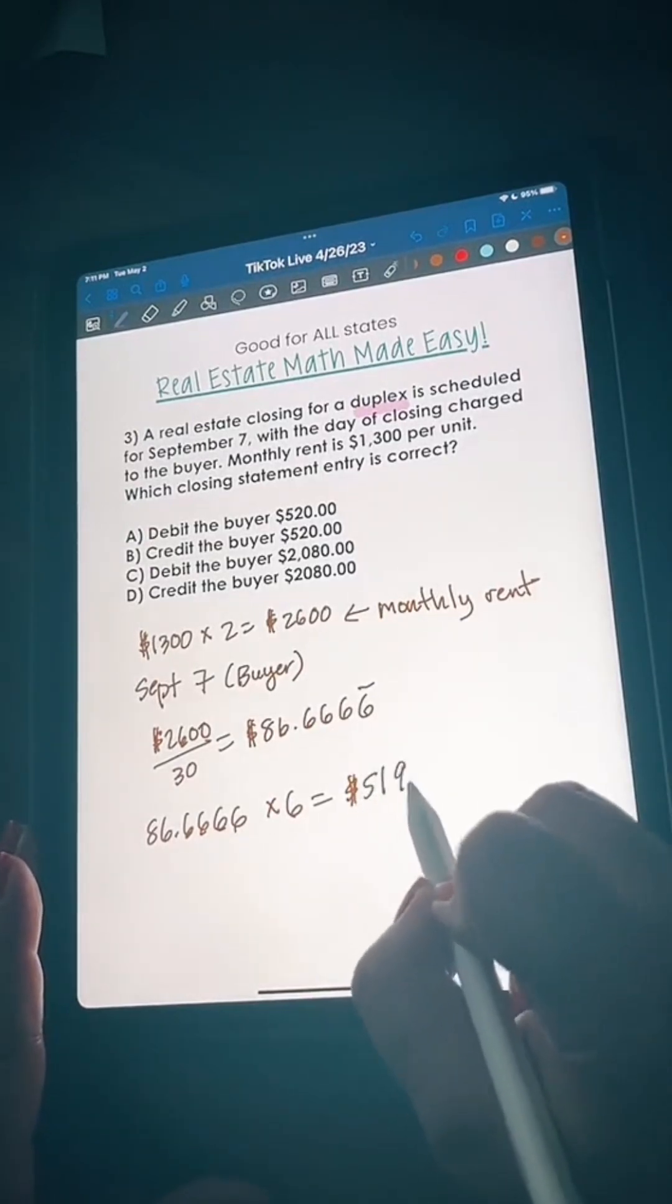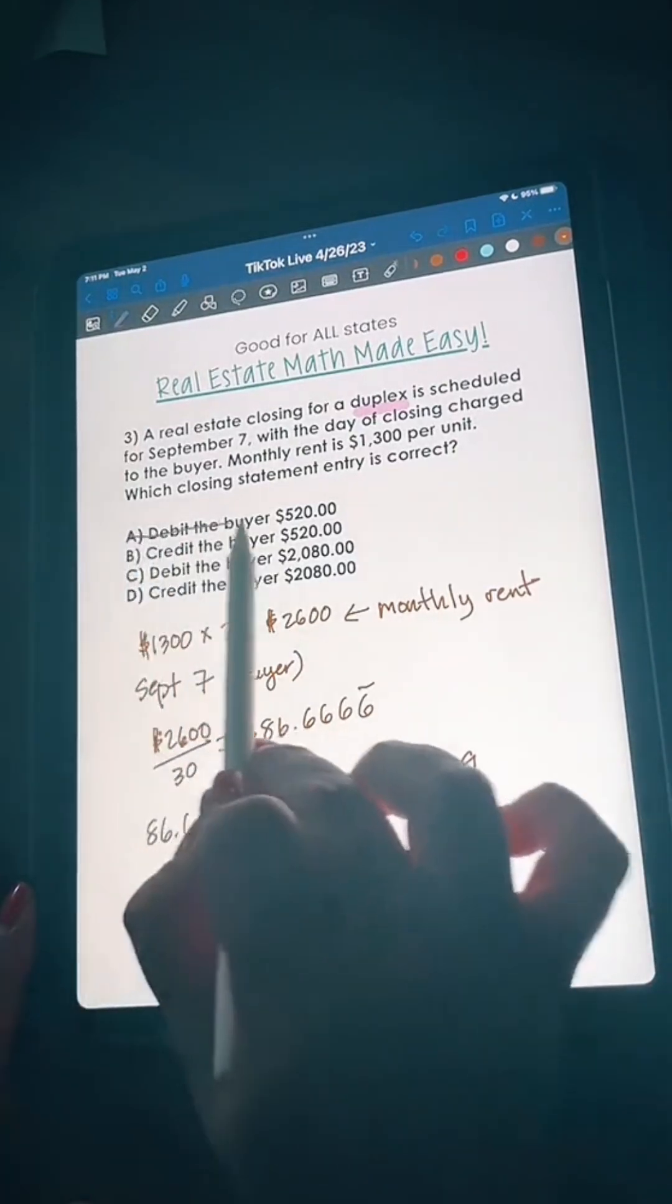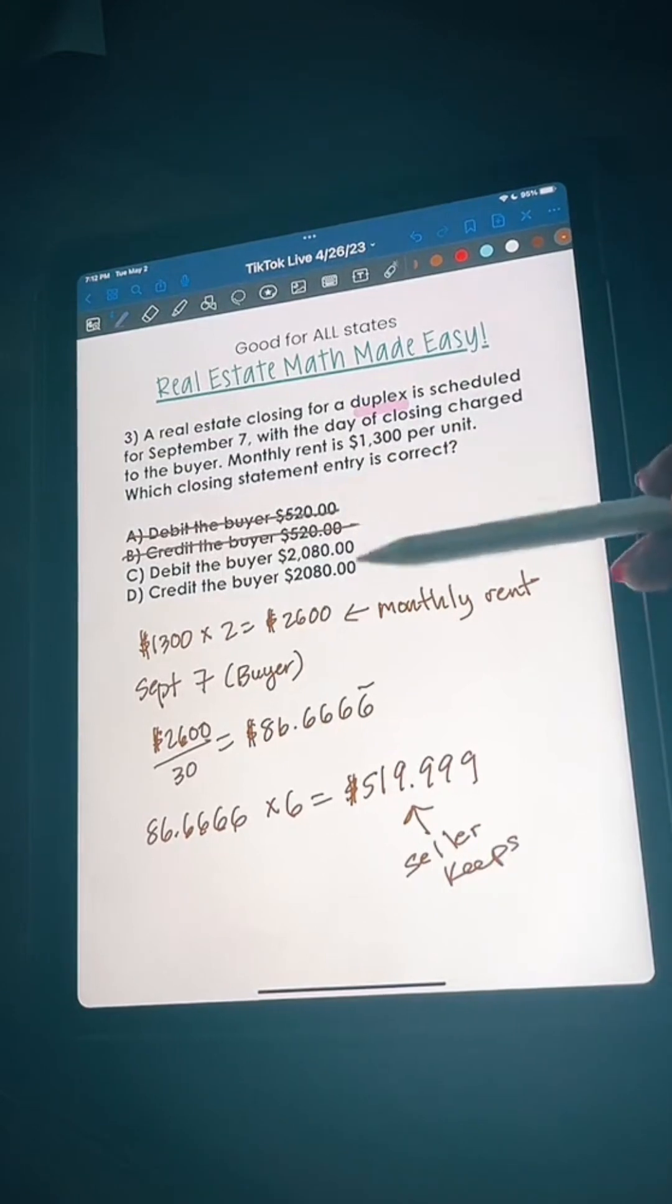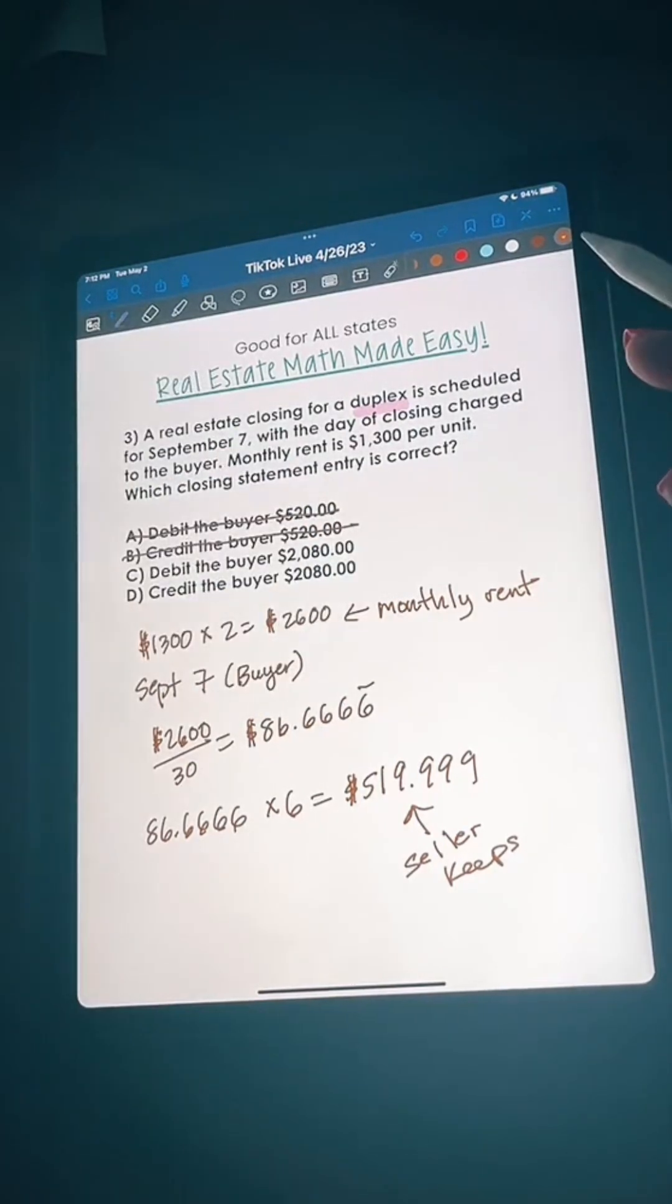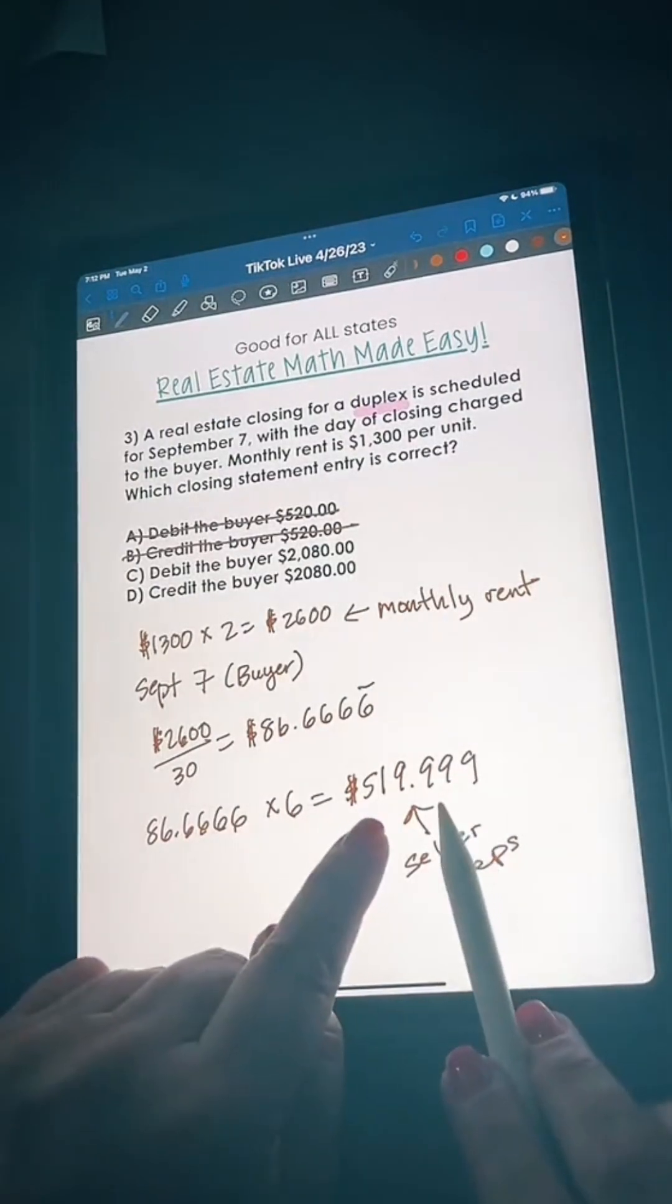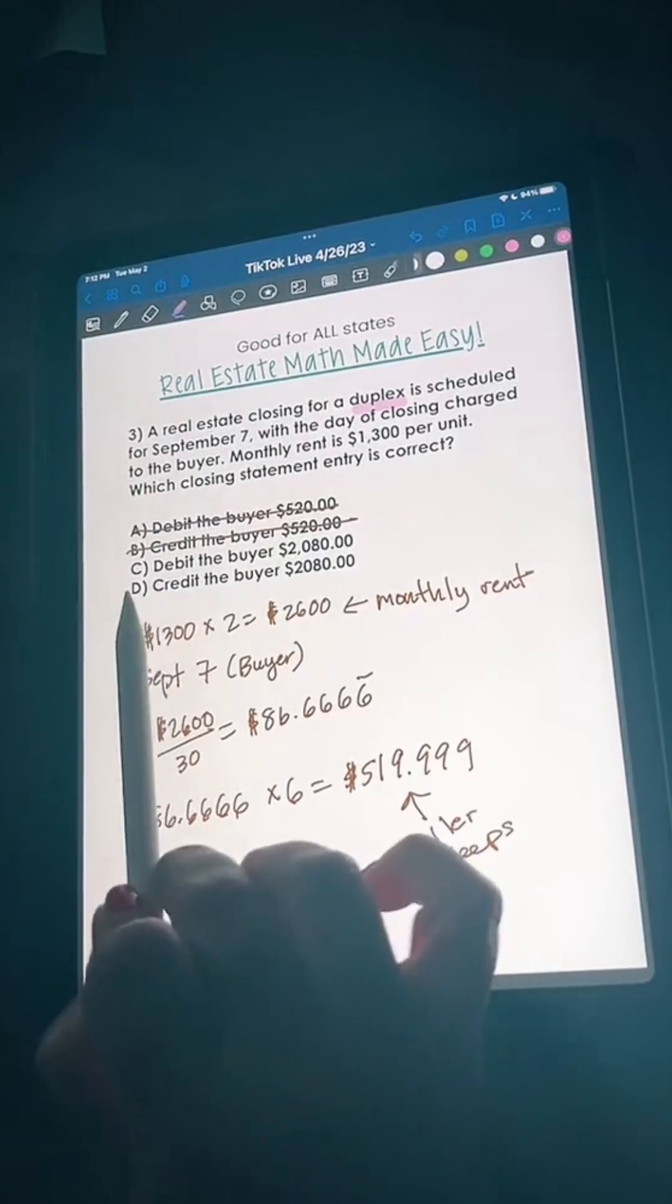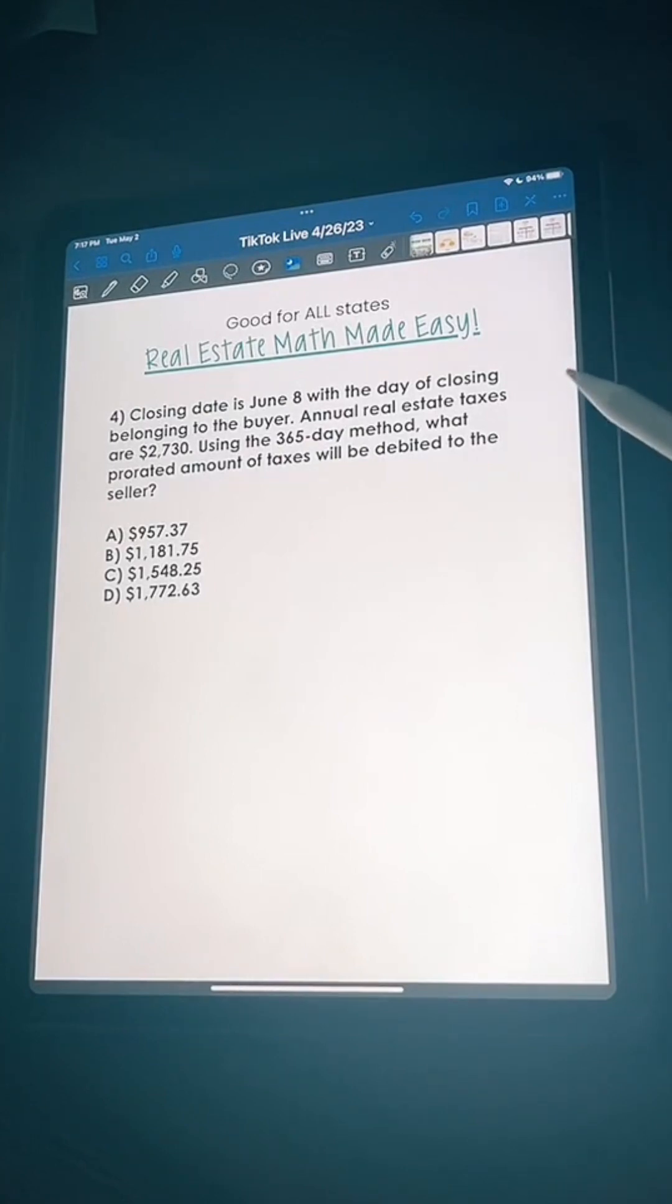Since we already know it's not 520 because this is what the seller keeps, if it's a closing on September 7th chances are the rent has already been paid to the seller. Now the buyer gets to get a portion of this rent payment which is 2080, so therefore we're going to credit the buyer that amount.